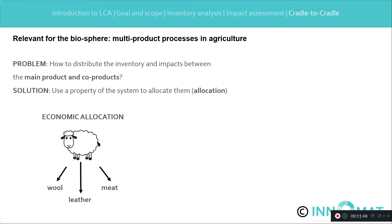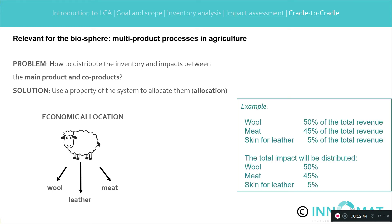LCA calculations in the biosphere are often a bit complicated, since the biosphere often has systems that produce multi-products, for instance in agriculture. The problem is how to distribute the environmental impacts between the main product and the co-products. The solution is called economic allocation. Let's take the example of a sheep: it produces wool, meat, and leather. The issue is how much of the eco-burden is to be allocated to each. That allocation can be done on the basis of kilograms, volume, or another physical property, but the most accepted idea is economic allocation on the basis of the sales price. In this case, 50% of the eco-cost is allocated to the wool, 45% to the meat, and 5% to the leather.